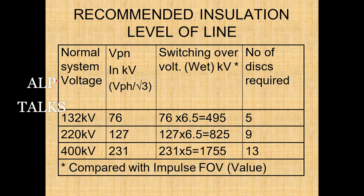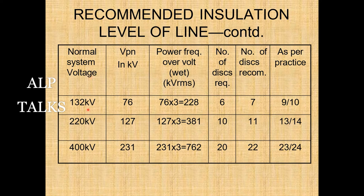Recommended insulation levels for transmission lines: for normal system voltages of 132, 220, and 400 kV, the phase-to-neutral voltages are 76, 127, and 231 kV respectively (dividing by √3). Switching overvoltage is generally taken as 6.5 times the phase voltage. For these voltage levels, the number of discs required based on switching frequency is 5, 9, and 13; based on power frequency (checked at 3 times), 6, 10, and 20 discs are required, with 1–2 additional discs recommended — giving practical values of 9–10, 13–14, and 23–24 discs.